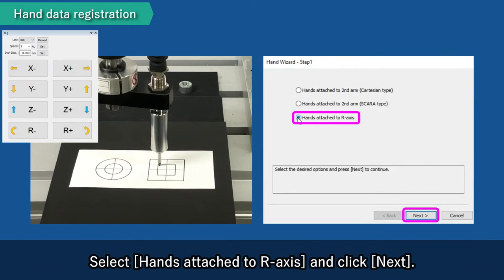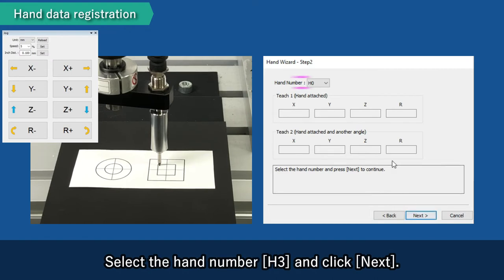Select Hands Attached to R-axis and click Next. Select the hand number H3 and click Next.